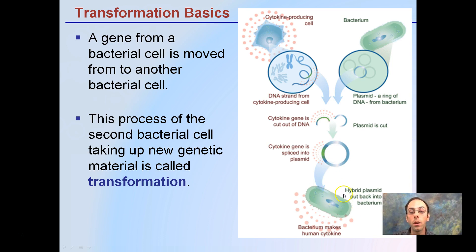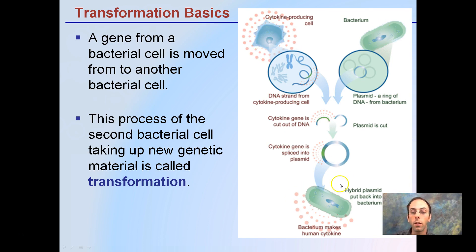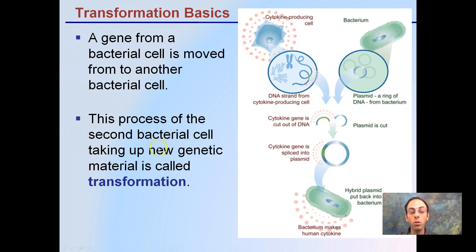That cell can then be transformed, meaning it is now producing the substance that the other cell was originally producing. We've transformed this bacteria into a merger of the two — the structure of the green bacteria but the producing qualities of the blue bacteria, through the plasmid. The process of the second bacteria cell taking up the new genetic material is called transformation.